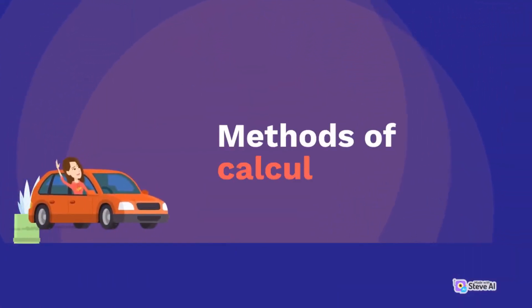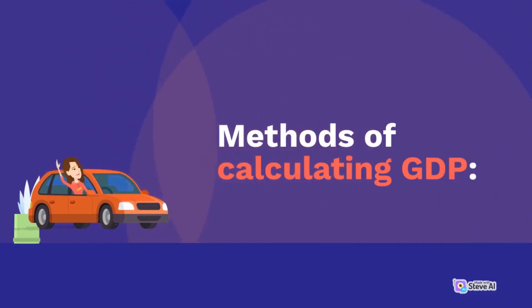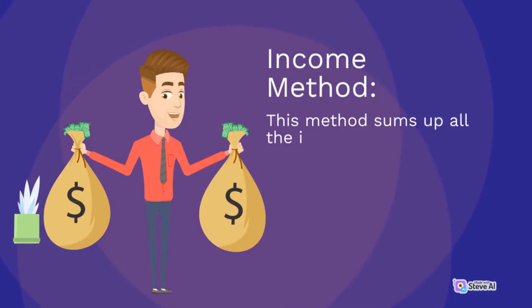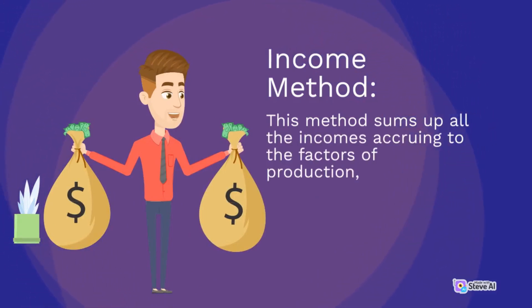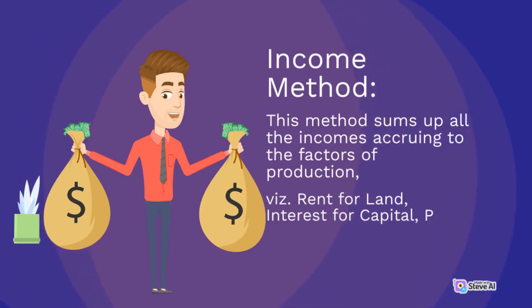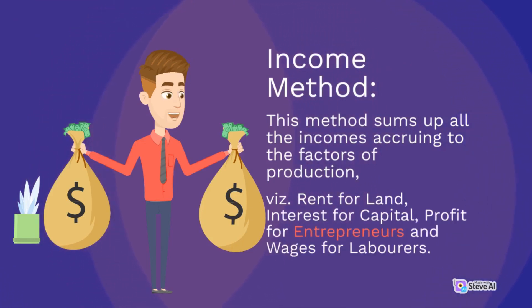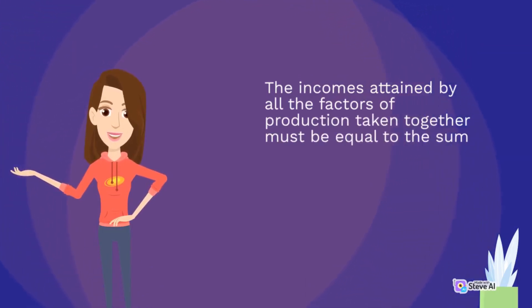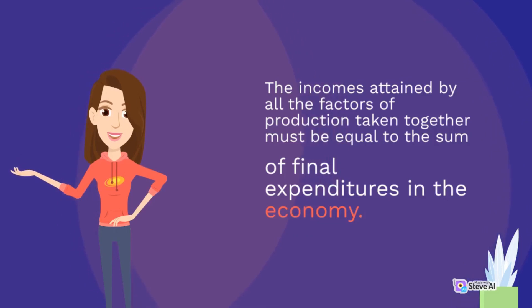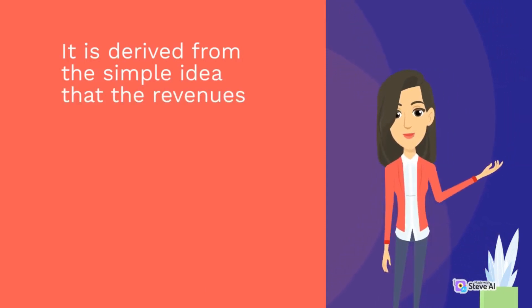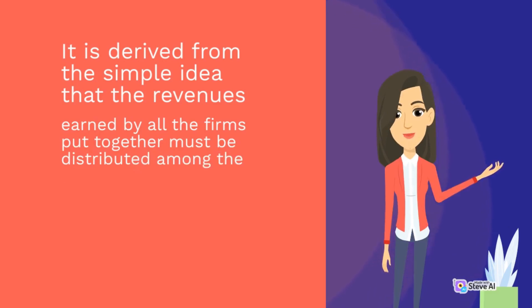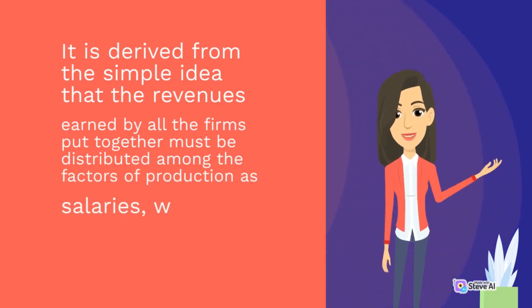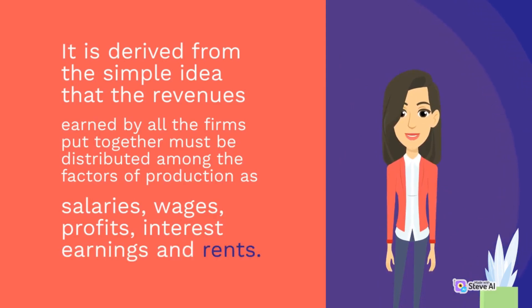Methods of Calculating GDP. Income Method: This method sums up all the incomes accruing to the factors of production, viz. rent for land, interest for capital, profit for entrepreneurs, and wages for laborers. The incomes attained by all the factors of production taken together must be equal to the sum of final expenditures in the economy. It is derived from the simple idea that the revenues earned by all the firms put together must be distributed among the factors of production as salaries, wages, profits, interest earnings, and rents.